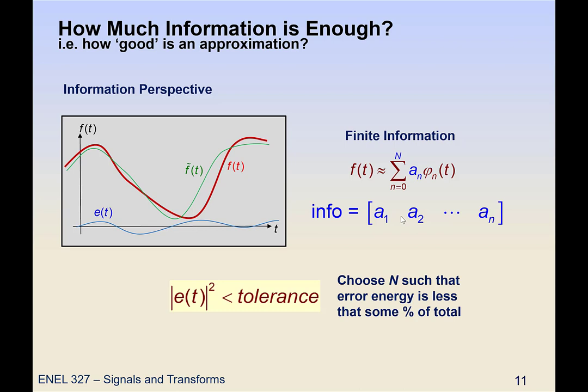So we basically just keep adding terms, a1, a2, a3, or keep increasing the size of the approximation until we've got, for instance, 95% of the original power. And that's some way of measuring how good an approximation it is. And then once we've got to 95% of the power, or in other words, when the error energy is only 5%, then that tells us how many coefficients we need. And that defines how much information we need to send.